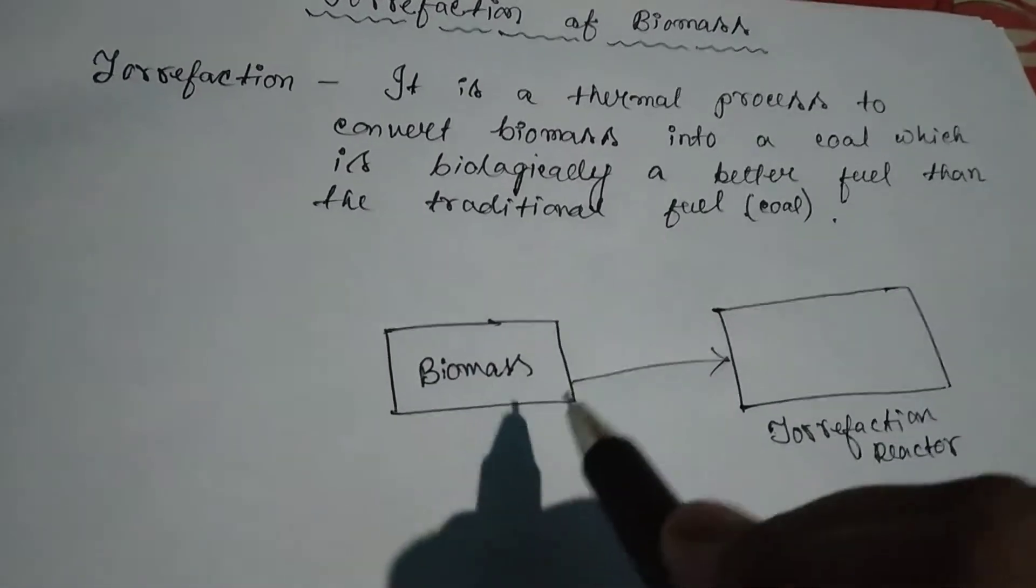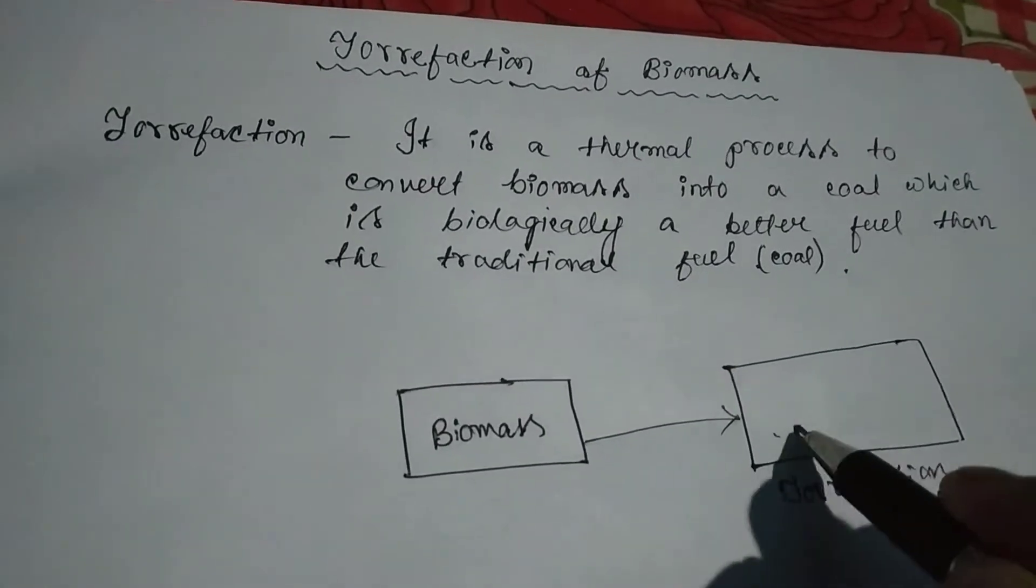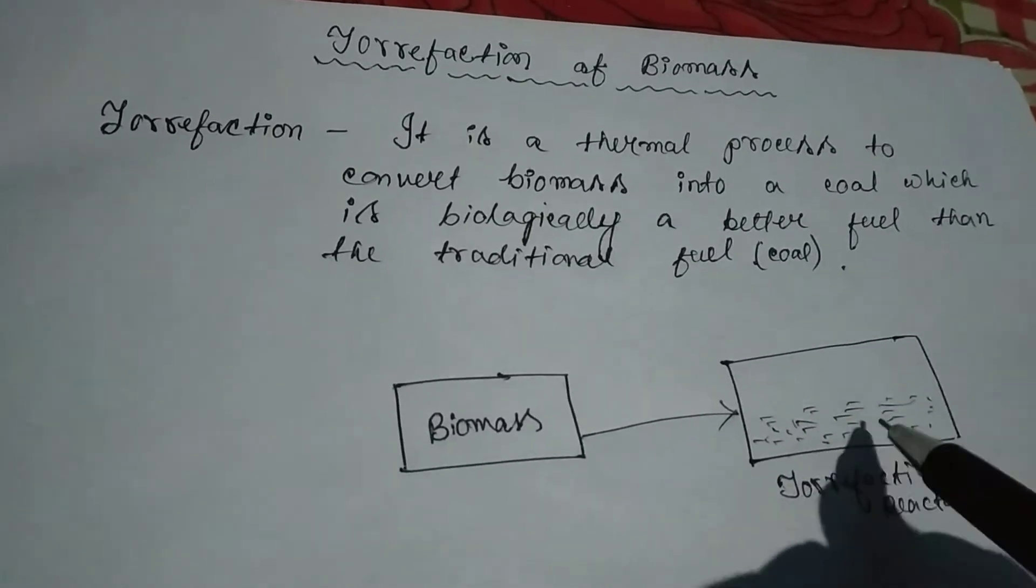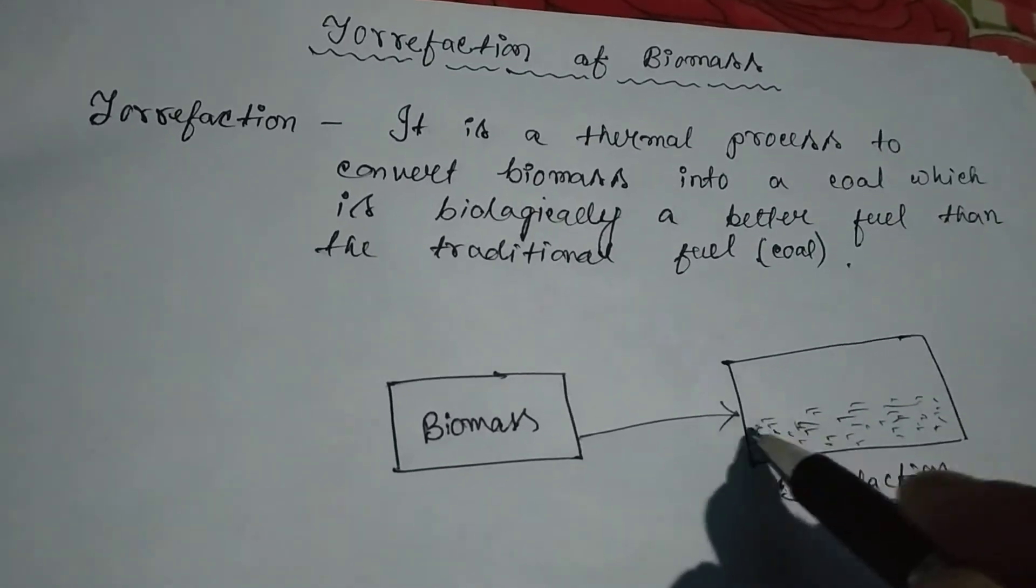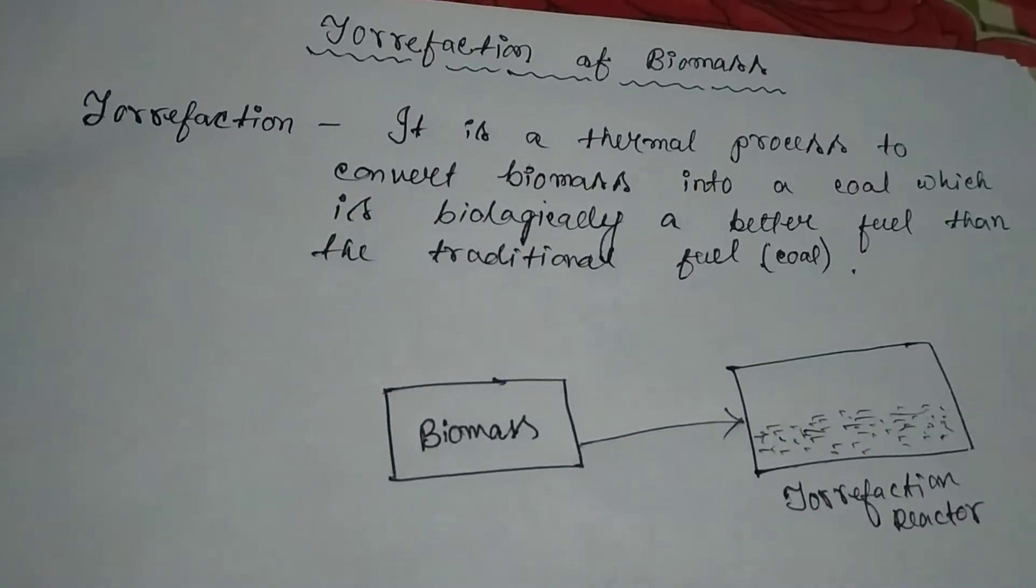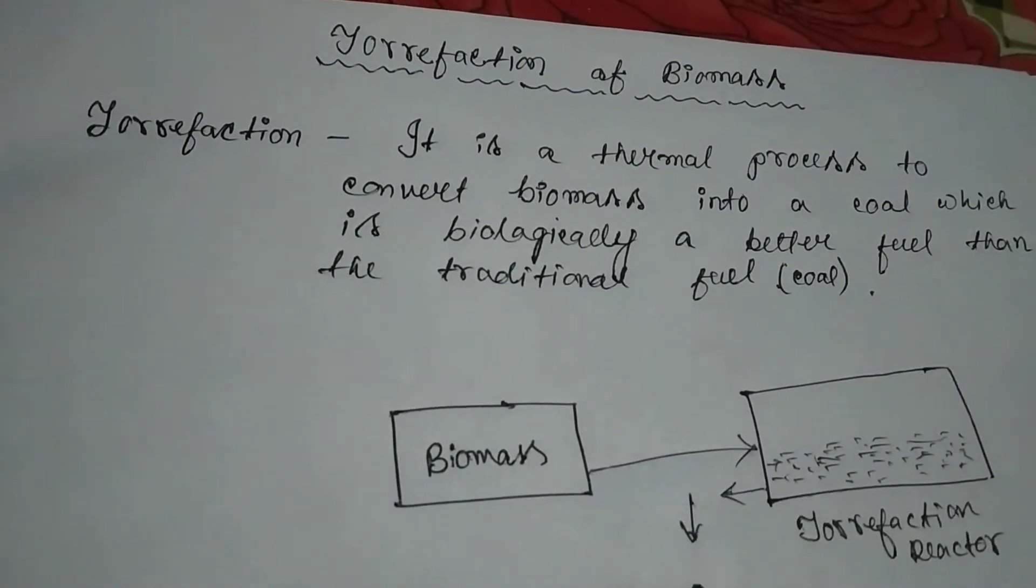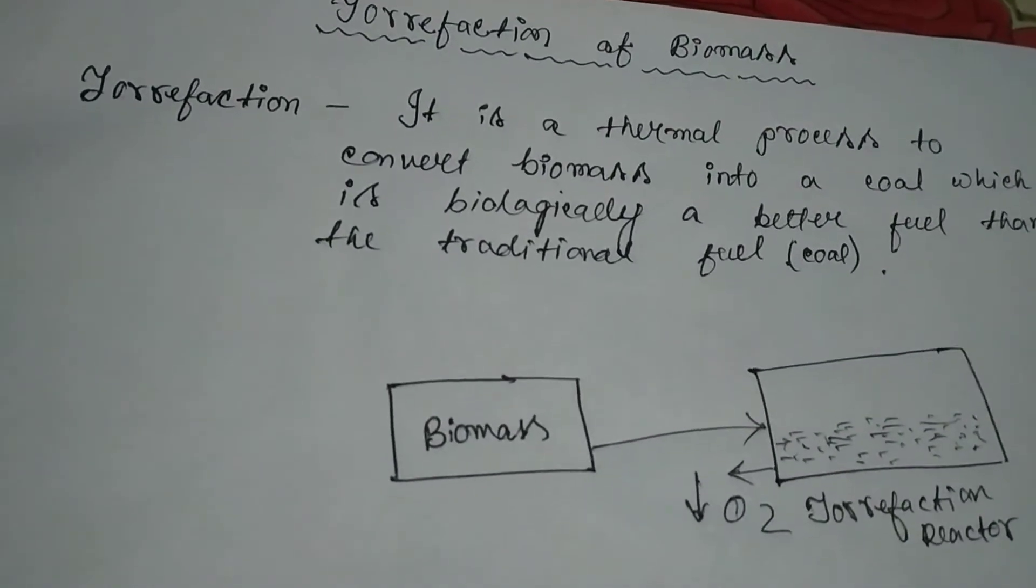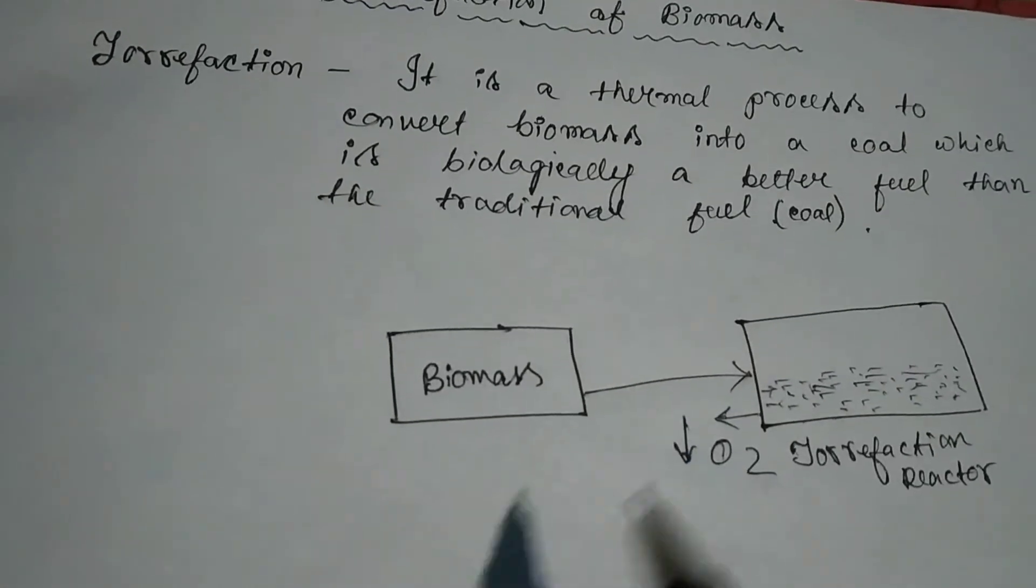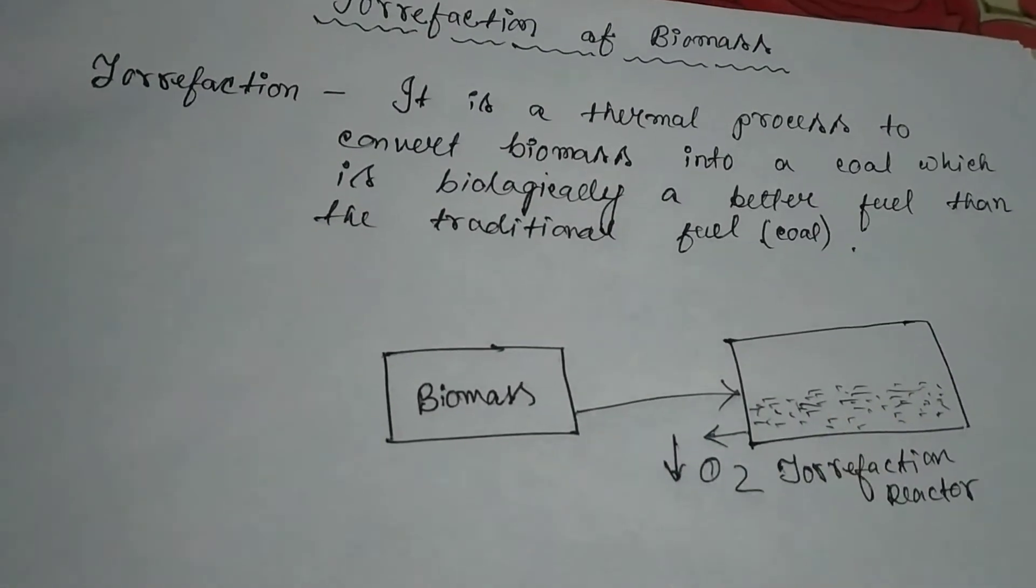In this reactor, the pyrolysis process is achieved. What happens when biomass comes to this chamber? For example, rice straws coming to this chamber are burnt using absence of oxygen. In this chamber there is very low oxygen or absence of oxygen, because complete absence of oxygen is very hard to achieve, so we can say very less oxygen is present.